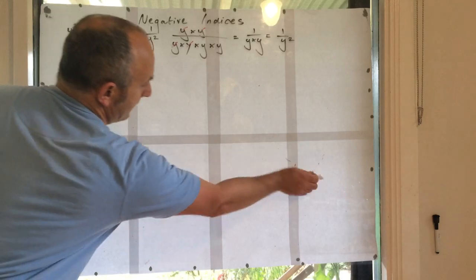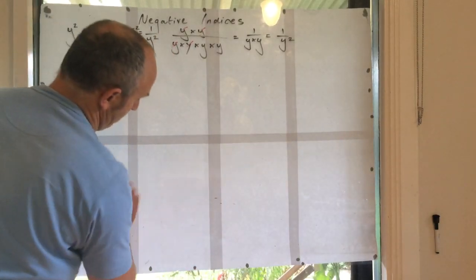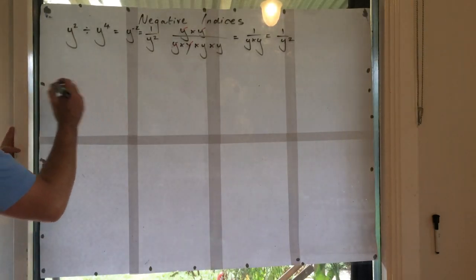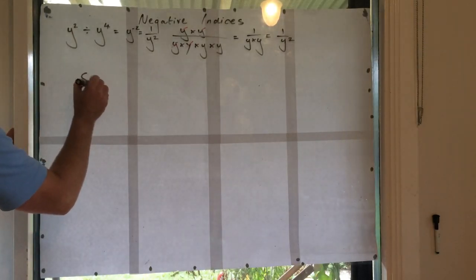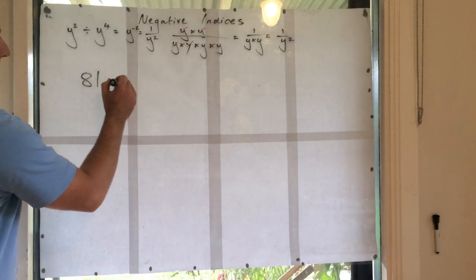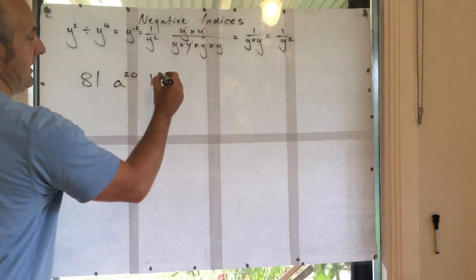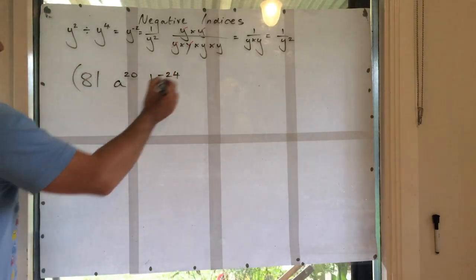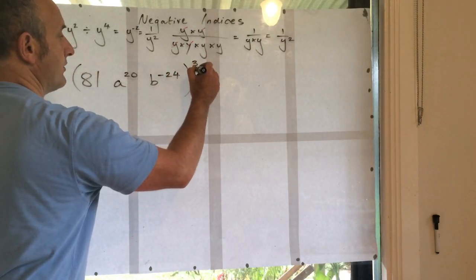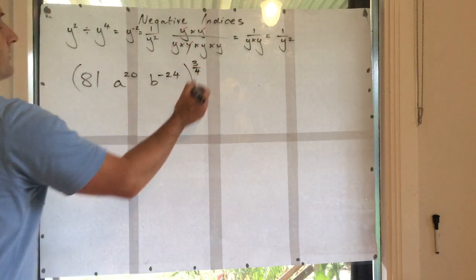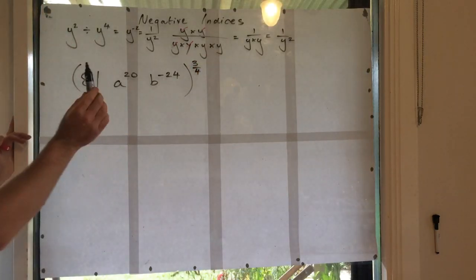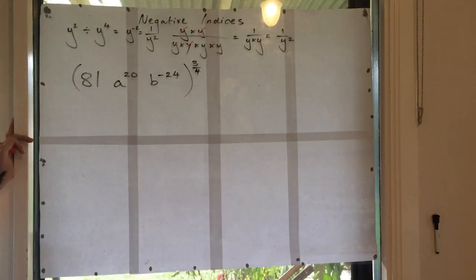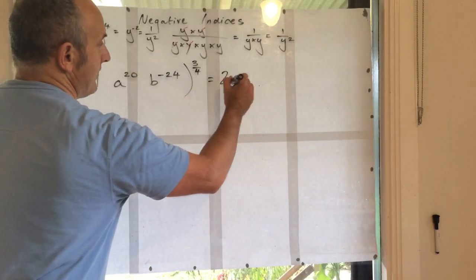So, what about if we've got something a little bit like this? So using our knowledge from before, maybe we go with this. 81, a to the 20, b to the negative 24, all to the 3 quarters. So, a little bit more complicated. So, I say, what is 81 to the 3 quarters? 81 to the 3 quarters is 27.